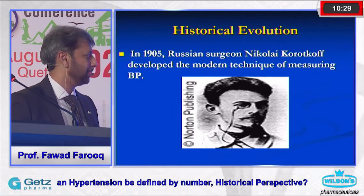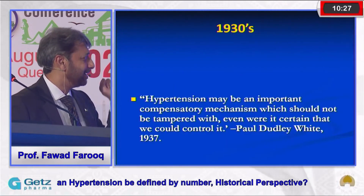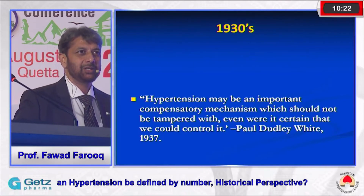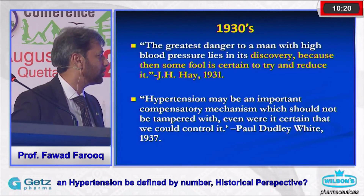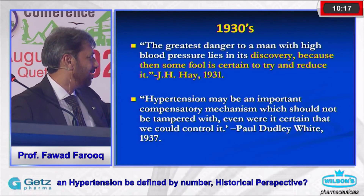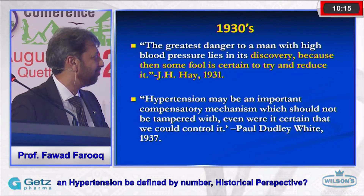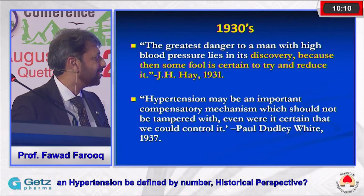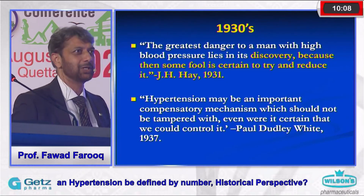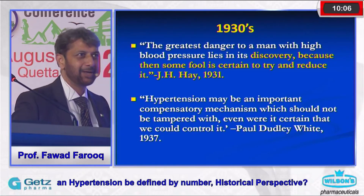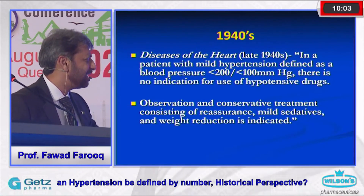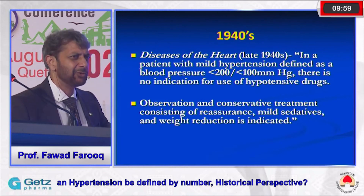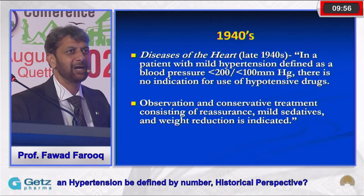Initially in the 1930s, high blood pressure was thought to be a natural compensatory response. J.H. Hay famously said: 'The greatest danger to a man with high blood pressure lies in its discovery, because then some fool is certain to try and reduce it.' Physicians did not want to reduce blood pressure at that time.